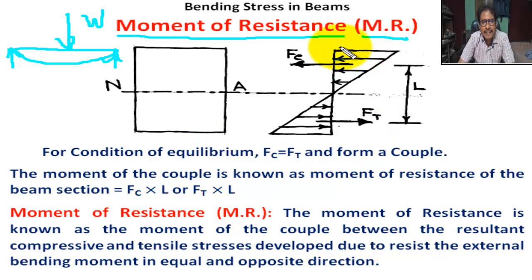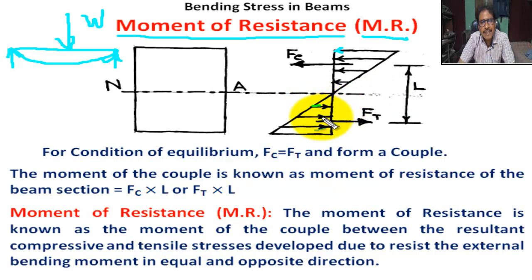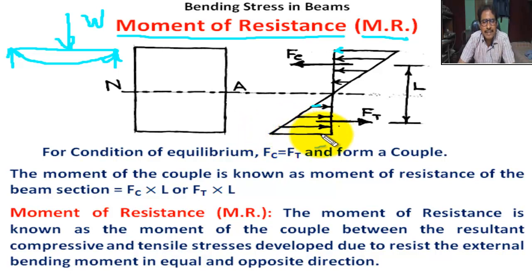In the stress distribution diagram, above NA, compressive stress increases in this way — this is the maximum compressive stress. Below NA, tensile stress increases gradually, and this is the highest tensile stress at the bottommost layer.